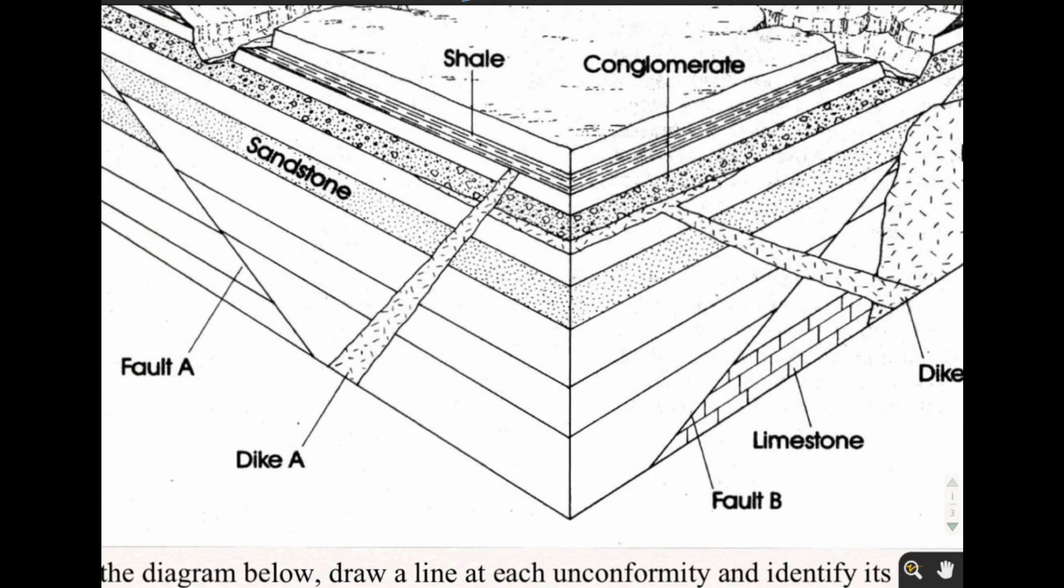For a little example, Dike A right here has to have come after the sandstone, the conglomerate, and Dike B right here. How do I know? It came after because it goes through all of those other guys. So it had to have come later.